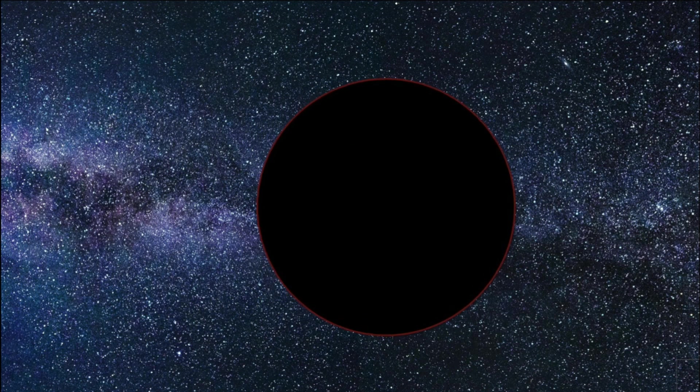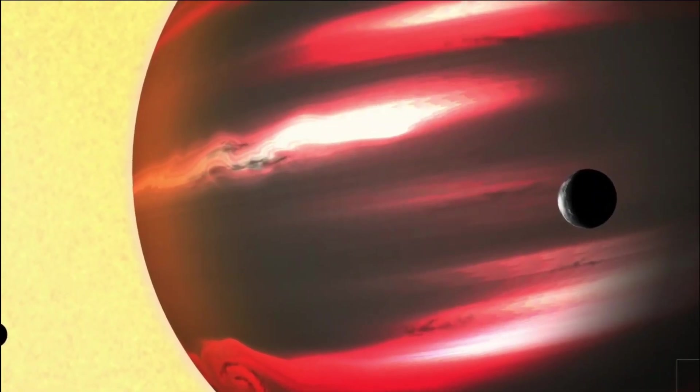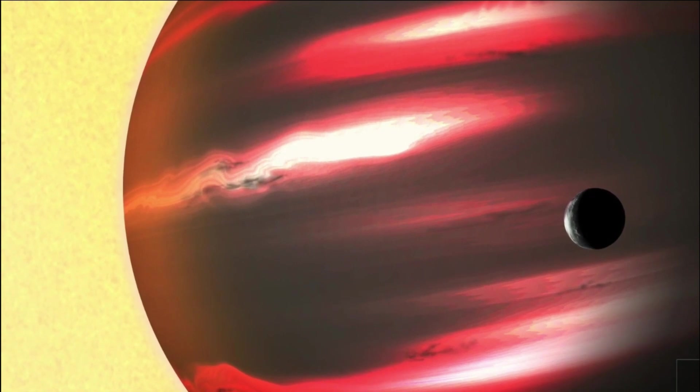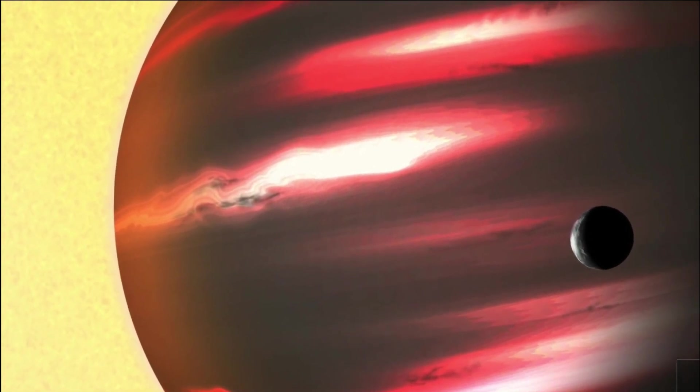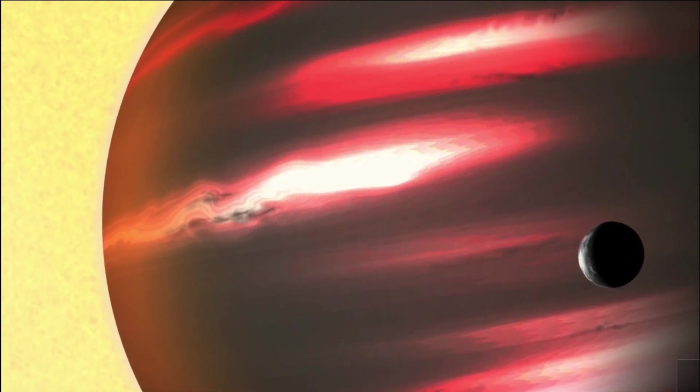It is a giant gas ball the size of Jupiter that reflects only 1% of the light. While tidally locked with its host star, TrES-2b has a temperature of 982 Celsius. Due to the scorching temperature, a tincture of blistering red flames was also observed in the pitch-black darkness by scientists.